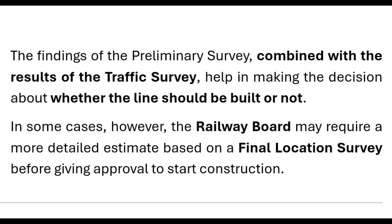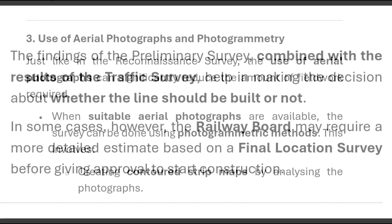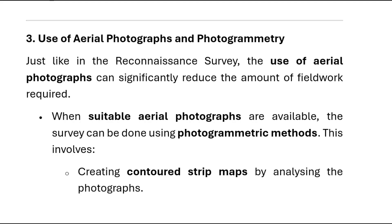The findings of the preliminary survey, combined with the results of the traffic survey, help in making the decision about whether the line should be built or not. In some cases, however, the railway board may require a more detailed estimate based on a final location survey before giving approval to start construction. Just like in the reconnaissance survey, the use of aerial photographs can significantly reduce the amount of fieldwork required. When suitable aerial photographs are available, the survey can be done using photogrammetric methods.